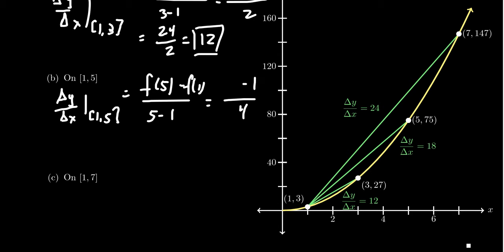f(1), we already did that one, that's 3. f(5) this time, you would take 5², which is 25, times it by 3, you get 75. 75 - 3 is 72 divided by 4, and that turns out to be 18.